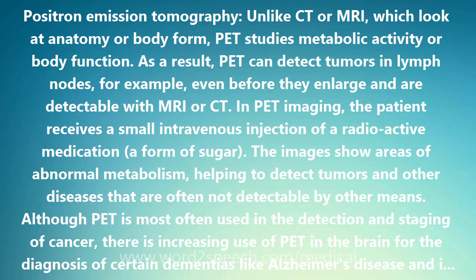In PET imaging, the patient receives a small intravenous injection of a radioactive medication — a form of sugar. The images show areas of abnormal metabolism, helping to detect tumors and other diseases that are often not detectable by other means.